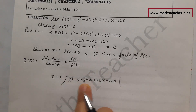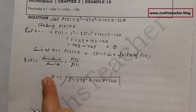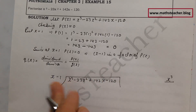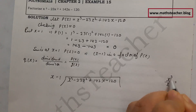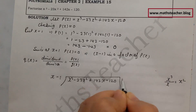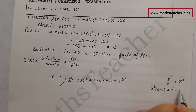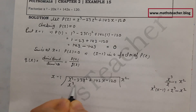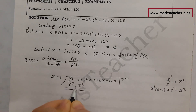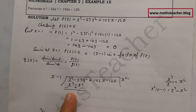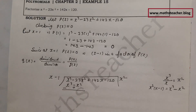First, look at the degrees: dividend degree is 3, divisor degree is 1. Divide the maximum degree term of the dividend by the maximum degree term of the divisor: 3 minus 1 gives x square. This is our first quotient term. Multiply x square by x minus 1 to get x cube minus x square. Then change the sign and subtract from the dividend.